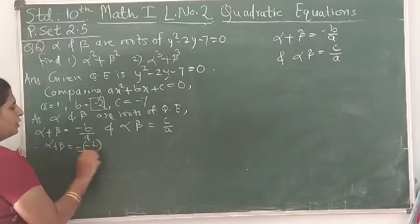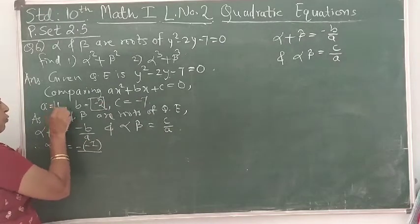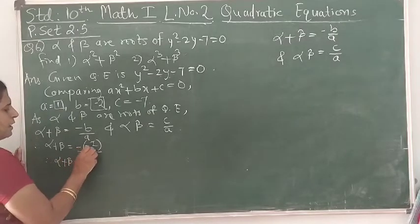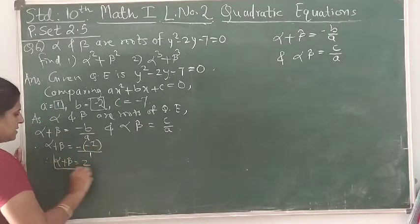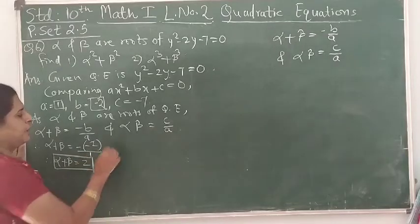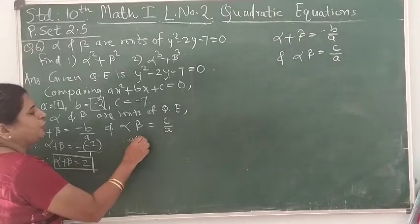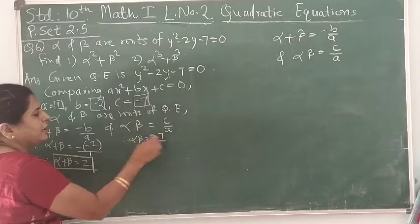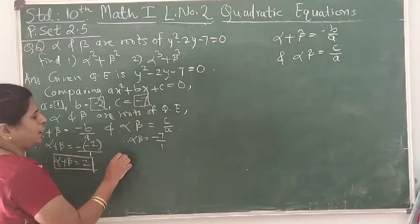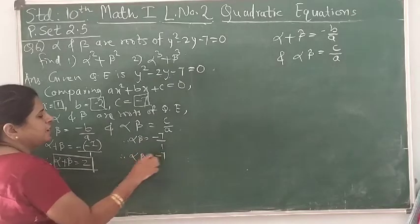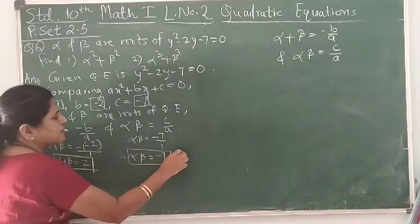And α × β = c/a = -7/1, therefore α × β = -7. Let's label these as equation number 1.